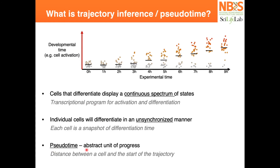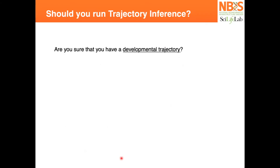Pseudotime is an abstract unit of progress that can represent anything: developmental time, cell activation, changes in position in the tissue, or migration from blood to tissue. It basically represents the distance between a cell and the start of the trajectory and the end of the trajectory — whatever that represents in your data or your biological question.